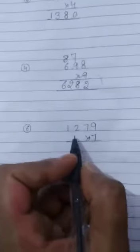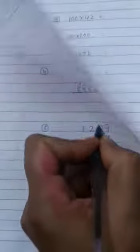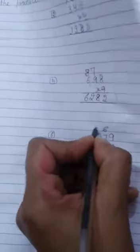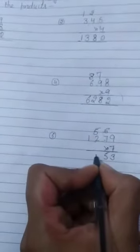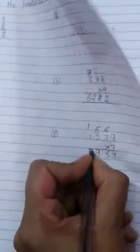Now question number 6. 7 times 9 is 63. We will write 3 here and 6 here. 7 times 7 is 49, 49 plus 6 is 55. 5 is here and second 5 is here. 7 times 2 is 14, 14 plus 5 is 19. We will write 9 here and 1 here. 7 times 1 is 7, 7 plus 1 is 8. Now 8953 is the answer.